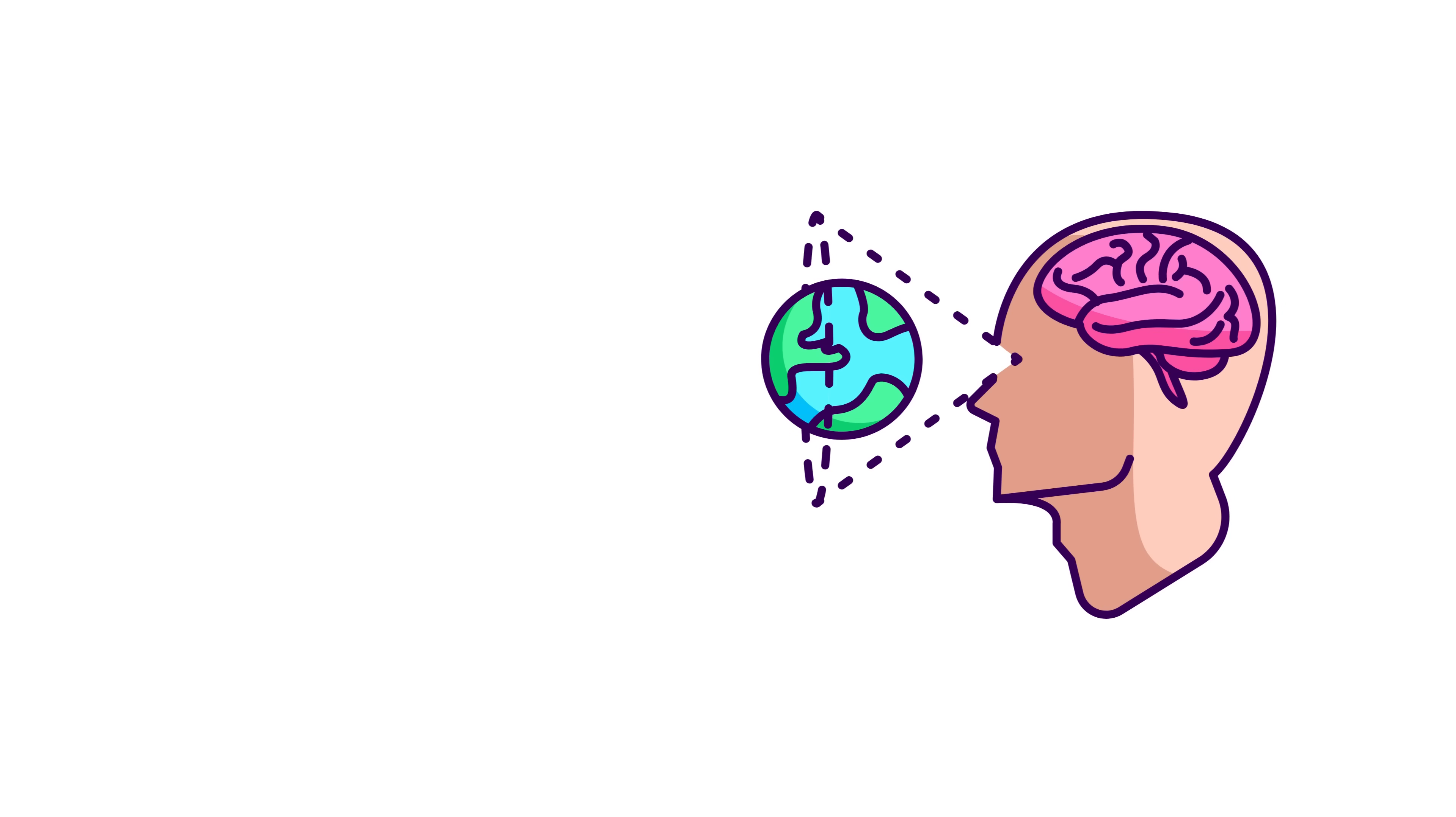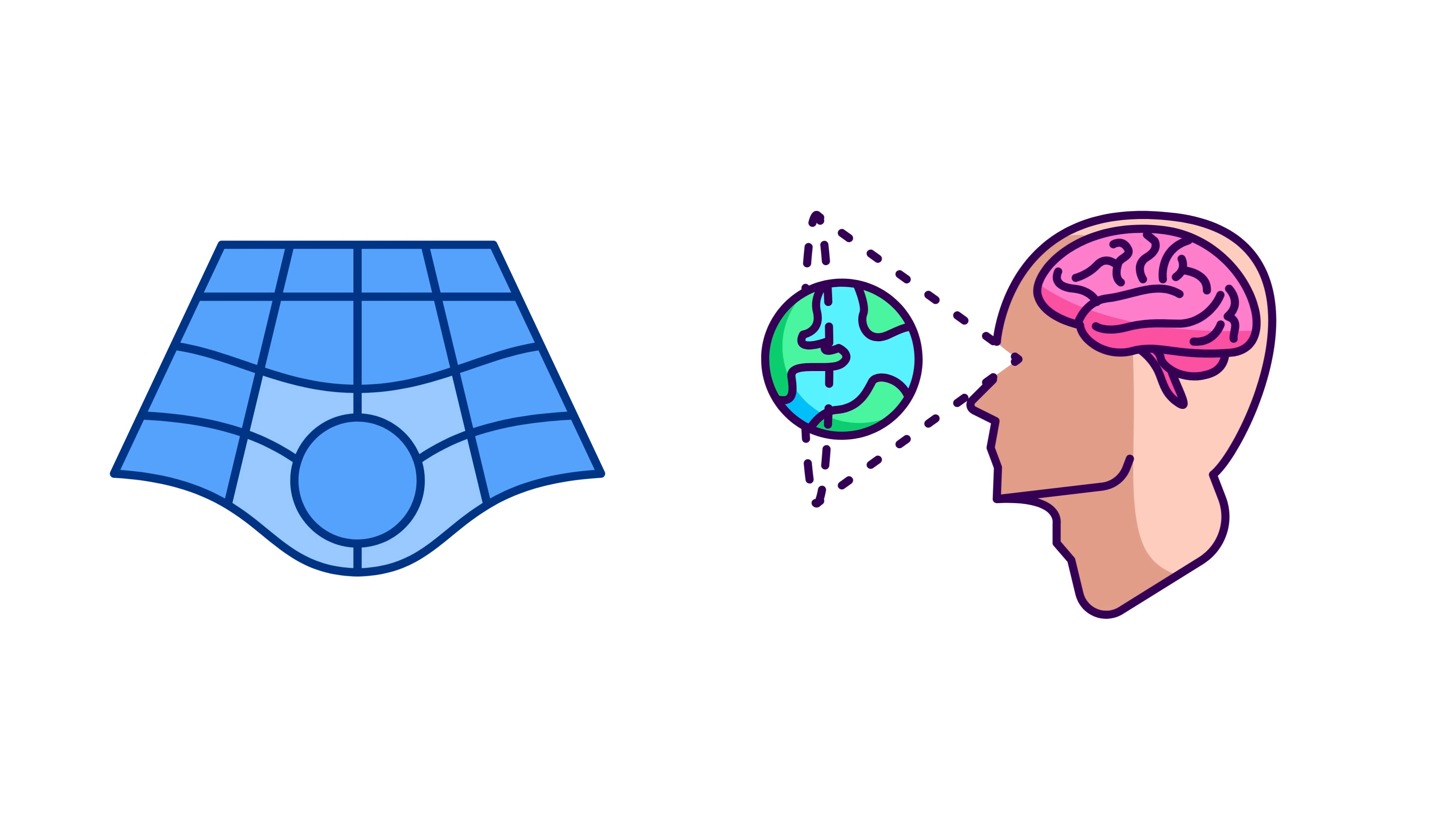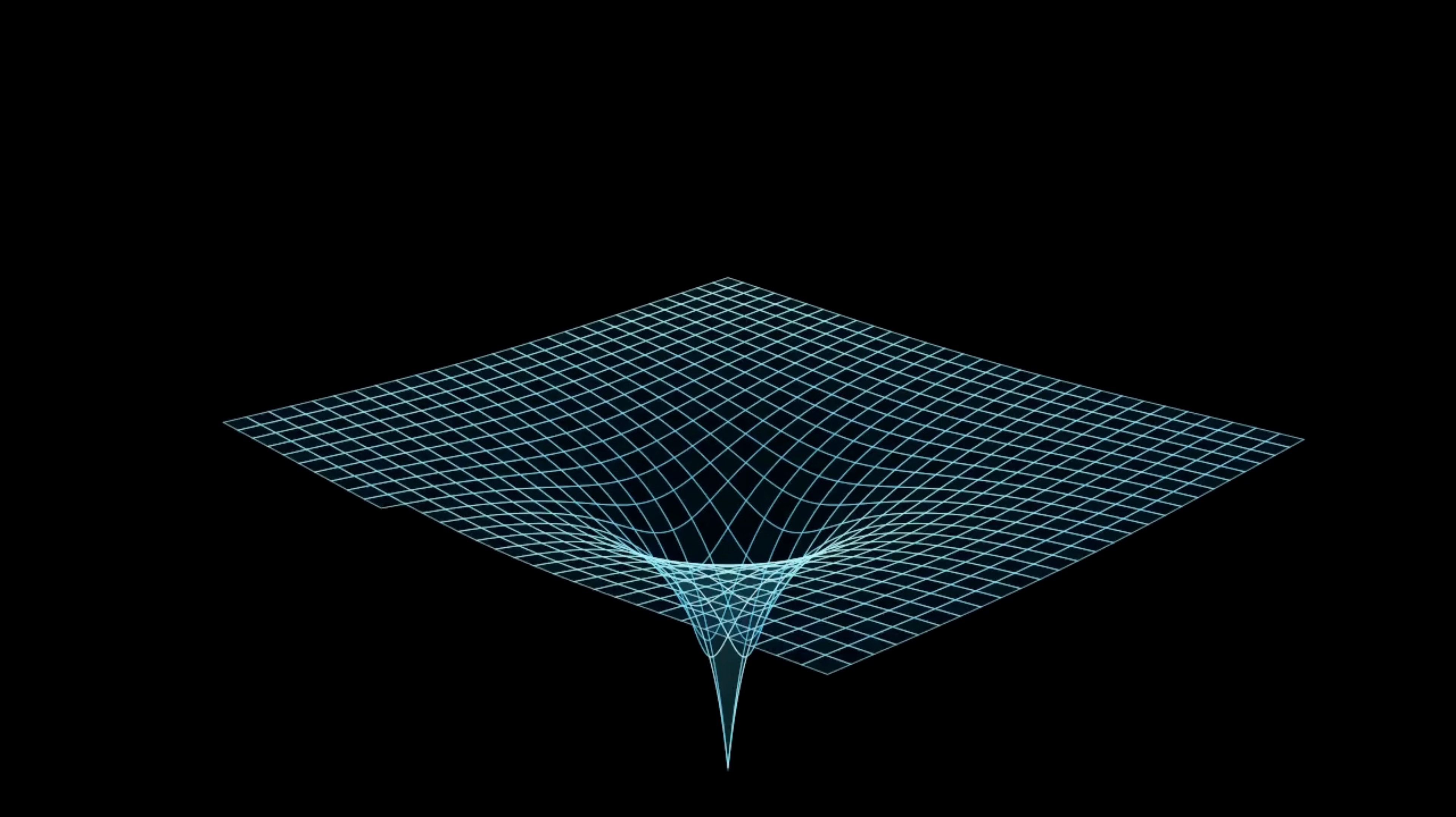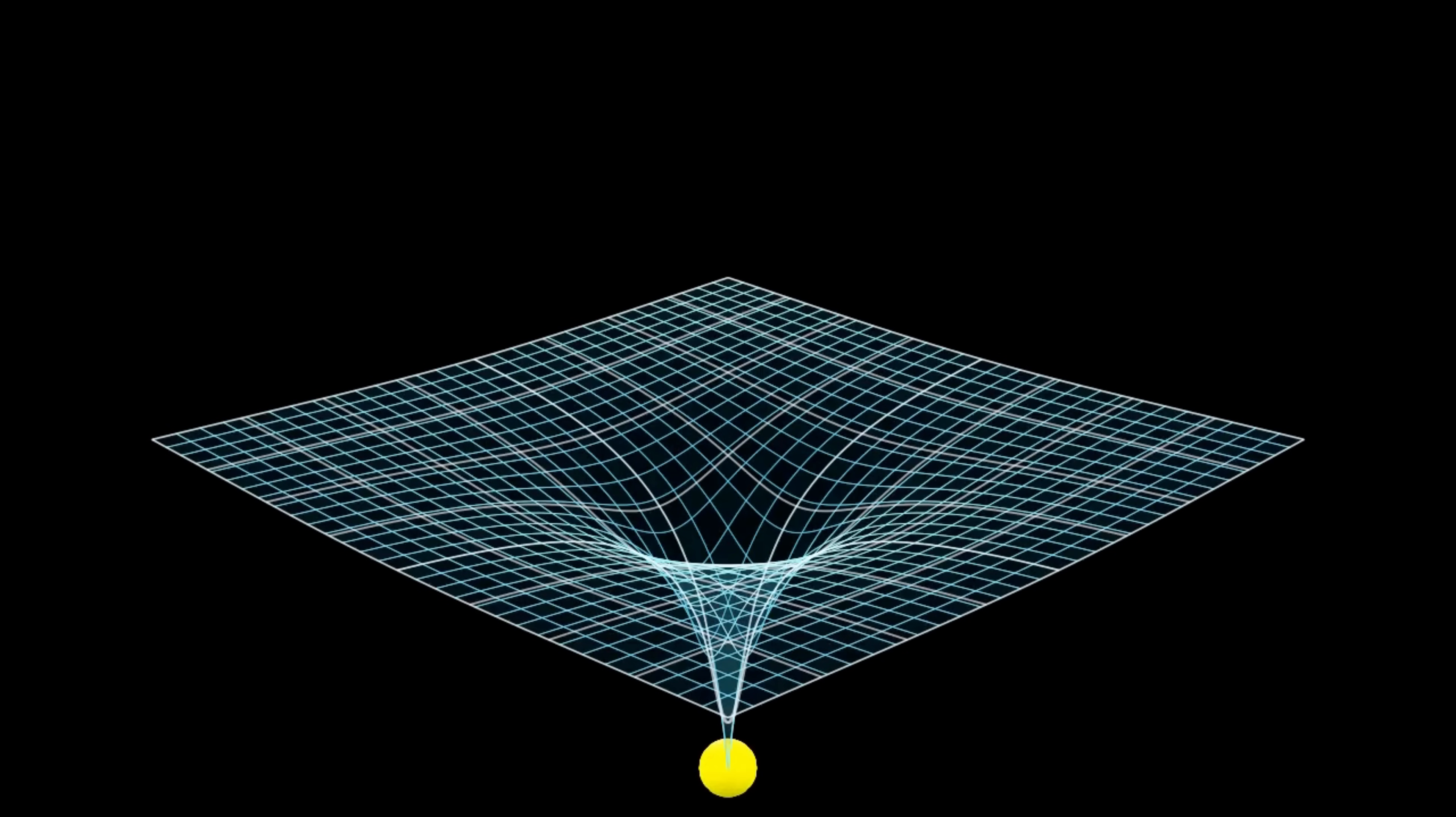One of the most famous ways to visualize this is with the trampoline analogy. Imagine a large, stretchy rubber sheet, like a trampoline. Now place a heavy ball in the center. The sheet sags under its weight. Now roll a smaller ball across the sheet.